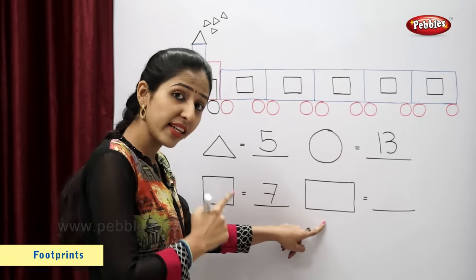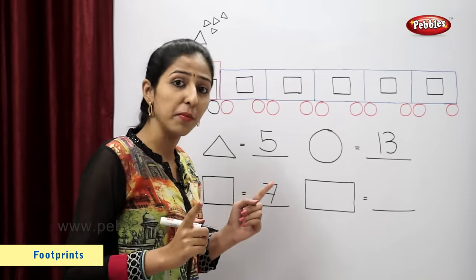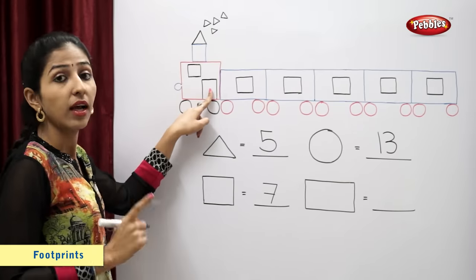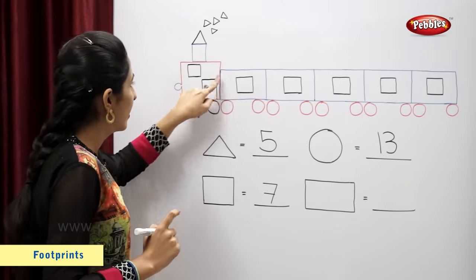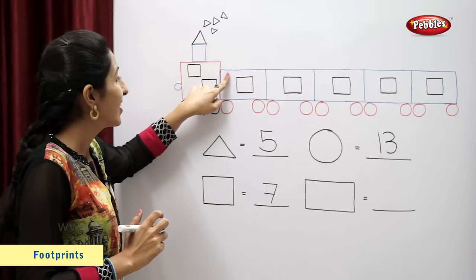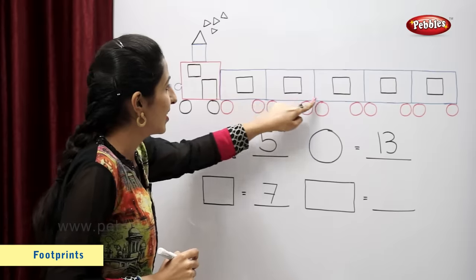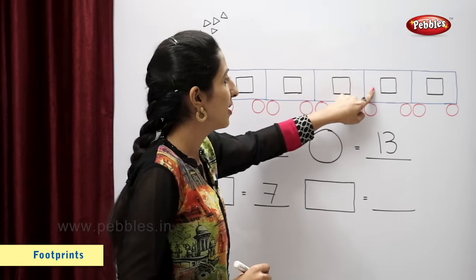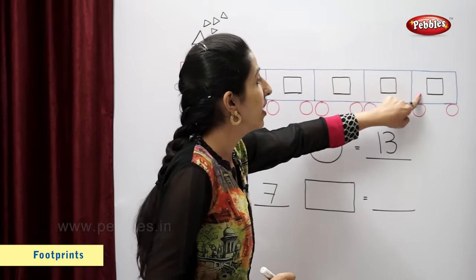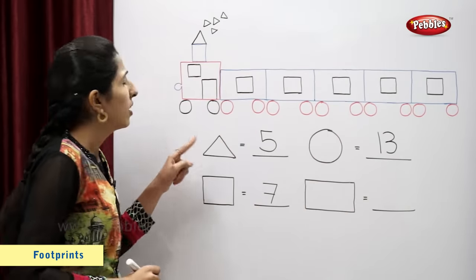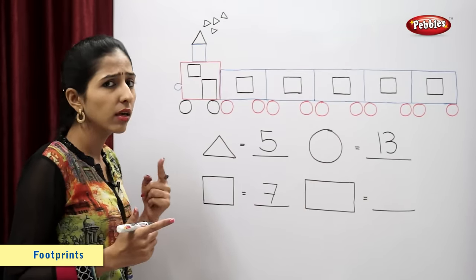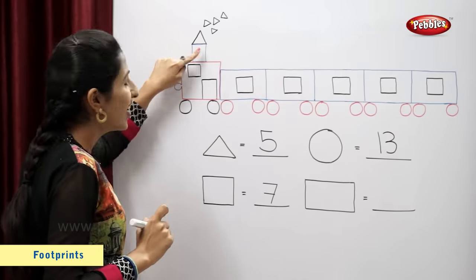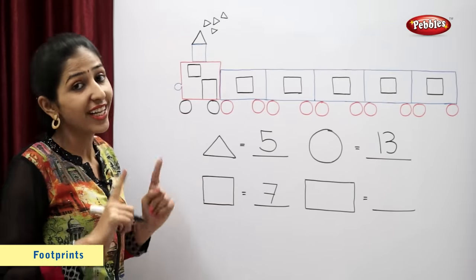This is a rectangle. Now let's count the number of rectangles: one, two, three, four, five, six. Can you find any more rectangles? Yes. There is one more rectangle. So seven. So there are total seven rectangles.